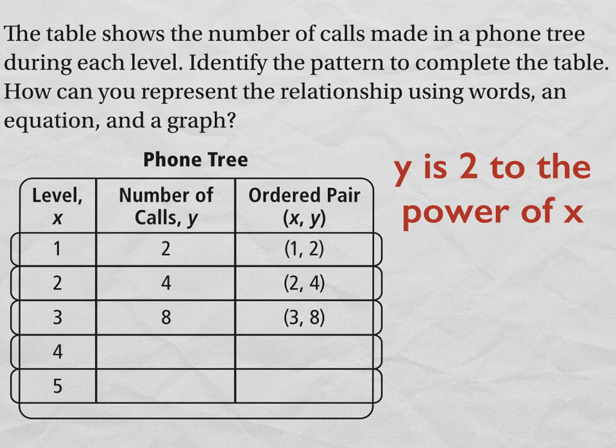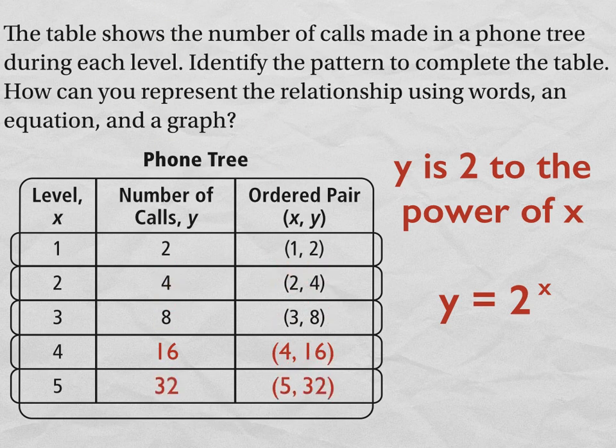So 2 to the first power would be 2. 2 squared or 2 to the second power would be 4. 2 cubed or 2 to the third power would be 2 times 2 times 2, which is 8. The other way that we could write that as an equation is y equals 2 to the x power, or to the power of x. So 2 to the fourth power would be 2 times 2 times 2 times 2, which is 16, which would give us an ordered pair 4, 16. 2 to the fifth power would be 32, which gives us the ordered pair 5, 32.